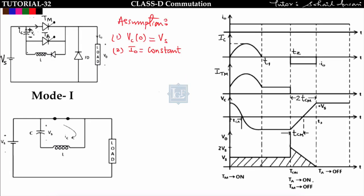This is the circuit diagram of Class D commutation. Here we have a main thyristor TM and an auxiliary thyristor TA, with an inductor, capacitor, and diode connected in this manner. Our job is to turn off the main thyristor. The initial assumption is: voltage drop across the capacitor equals supply voltage Vs (polarity plus to minus), and load current I₀ is constant, meaning we are dealing with a highly inductive load.